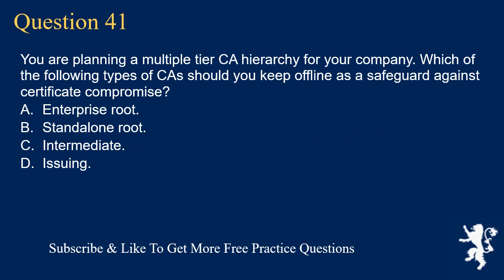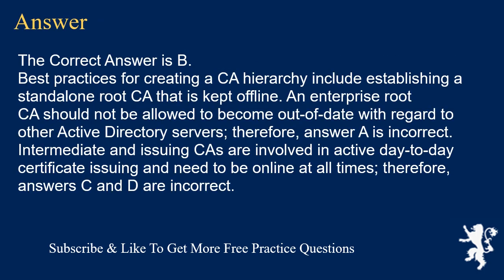Question 41. You are planning a multiple-tier CA hierarchy for your company. Which of the following types of CA should you keep offline as a safeguard against certificate compromise? A. Enterprise root. B. Standalone root. C. Intermediate. D. Issuing. The correct answer is B. Best practices for creating a CA hierarchy include establishing a standalone root CA that is kept offline. An enterprise root CA should not be allowed to become out of date with regard to other Active Directory servers. Therefore, answer A is incorrect. Intermediate and issuing CAs are involved in active day-to-day certificate issuing and need to be online at all times. Therefore, answers C and D are incorrect.